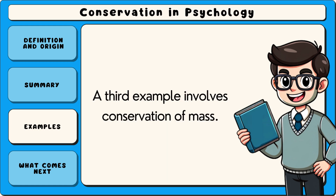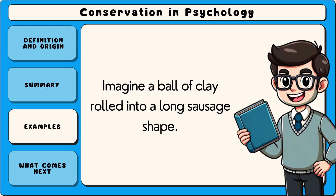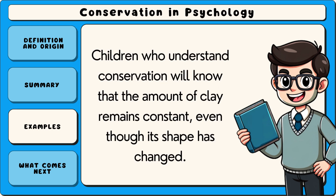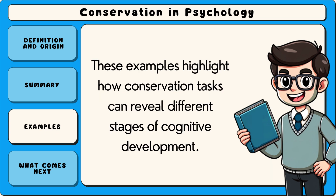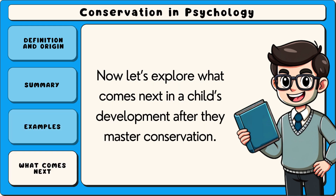A third example involves conservation of mass. Imagine a ball of clay rolled into a long sausage shape. Children who understand conservation will know that the amount of clay remains constant, even though its shape has changed. These examples highlight how conservation tasks can reveal different stages of cognitive development.